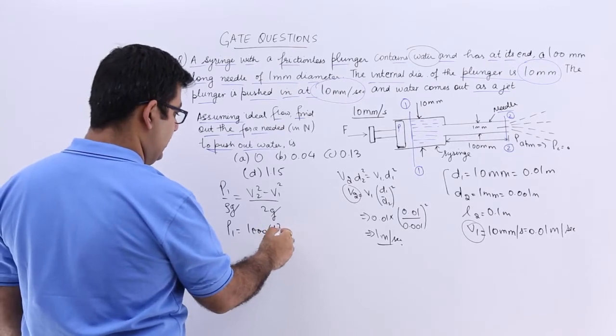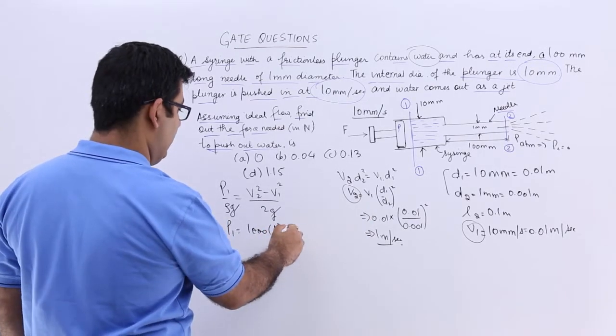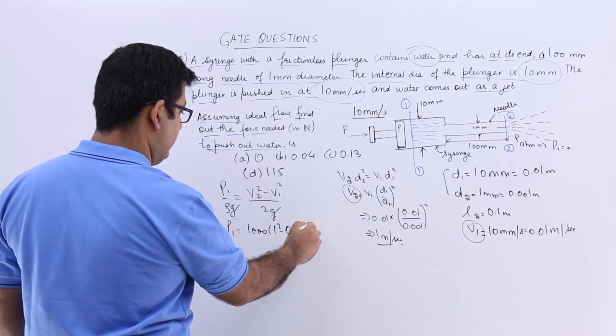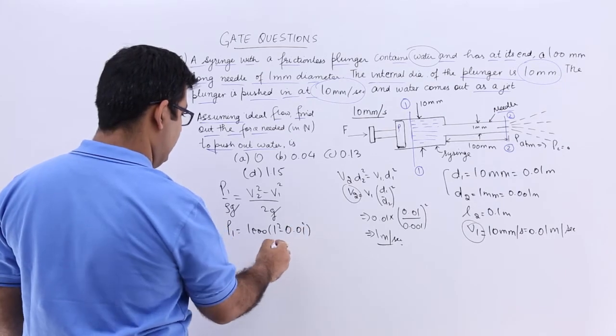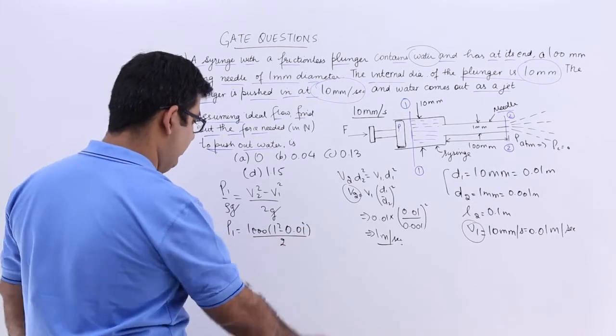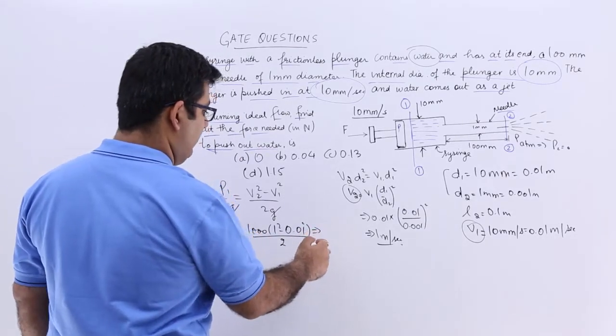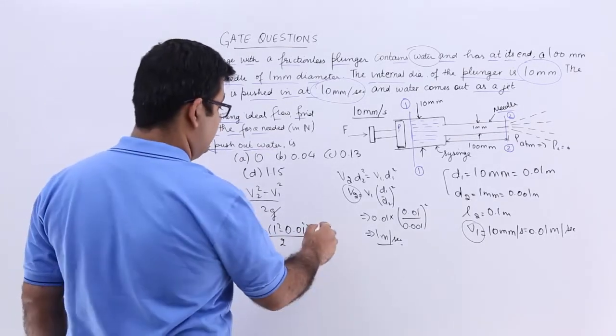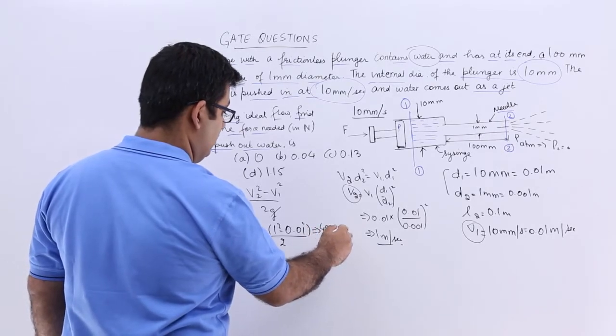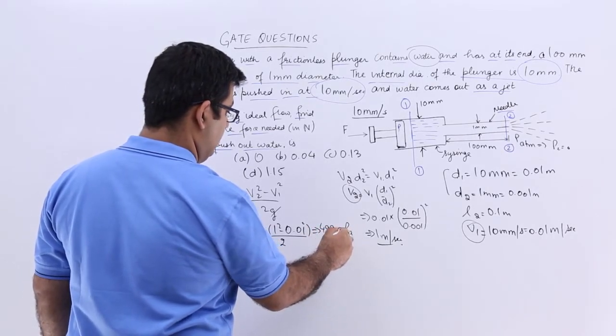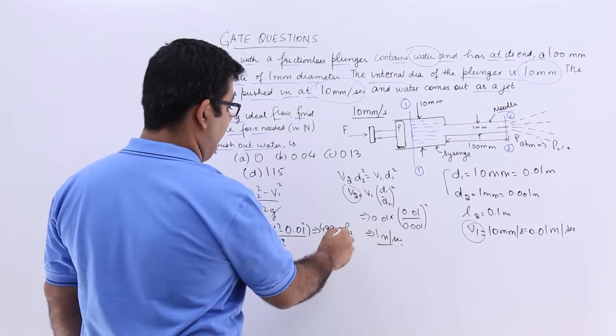V2 is 1 and V1 is 0.01 square and this is entirely divided by 2. So when you solve this part the pressure will be in Pascals, which is 499.95 Pascals.